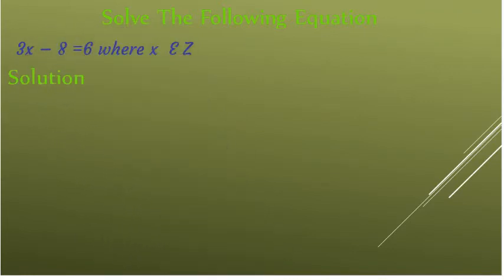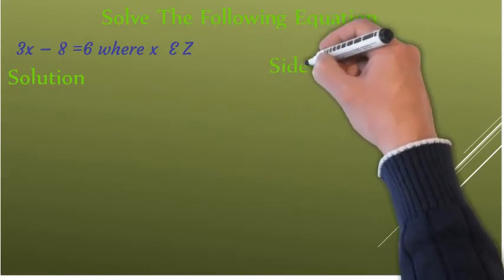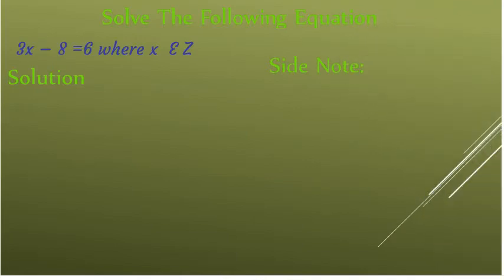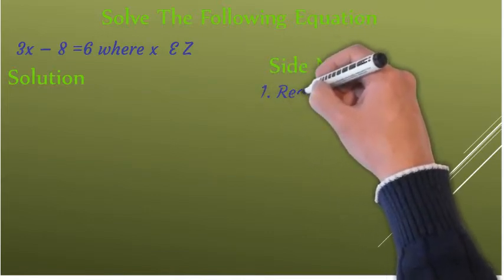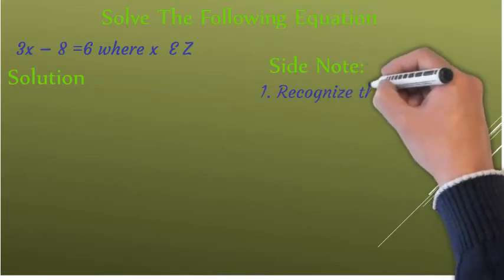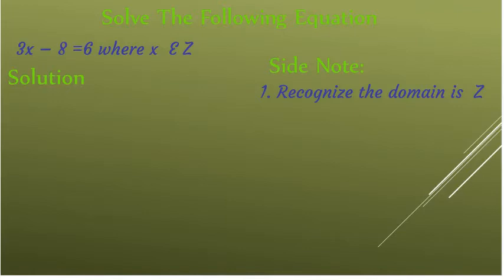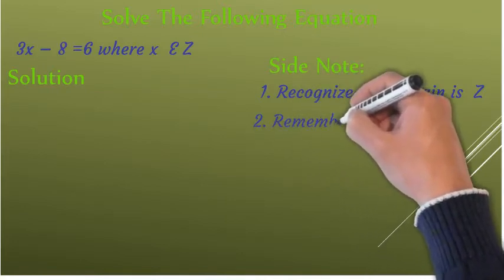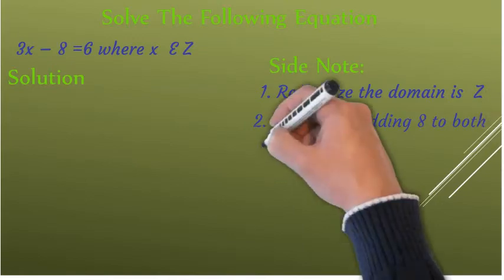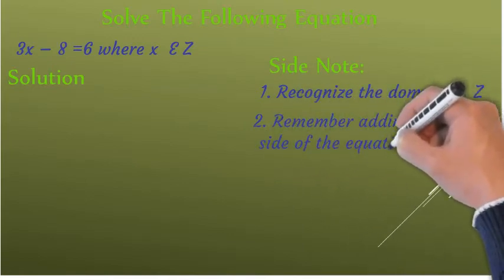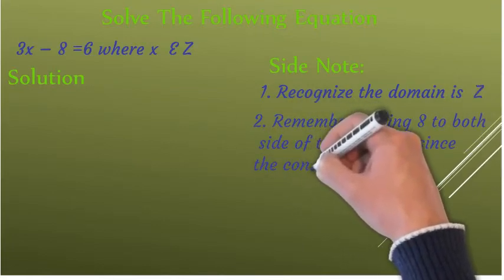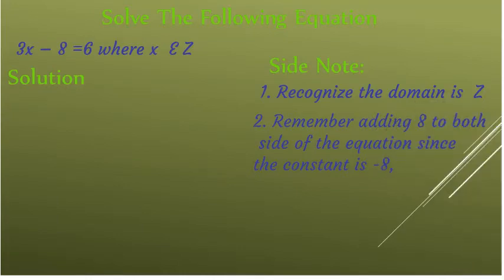Solution. Again, before we start our solution, we have to take some side notes. Number one: we know that the domain is integer here, and we have to recognize that — this is crucial to answer our question. Number two: since we have minus 8 as a constant, we will add 8 to both sides of the equation to move it to the other side, and the equation will still continue to be true. We have seen that example in the previous slide.